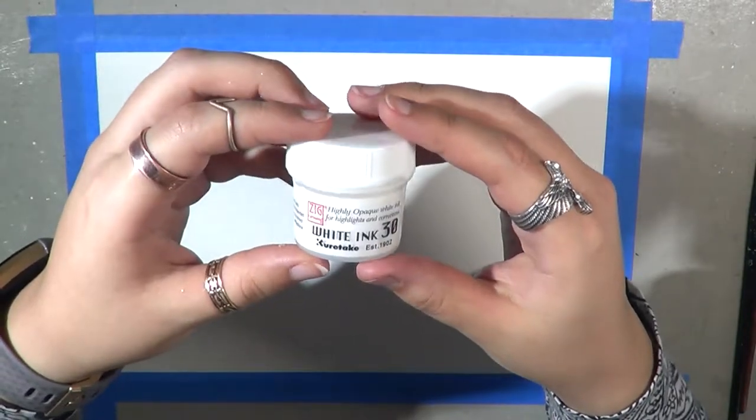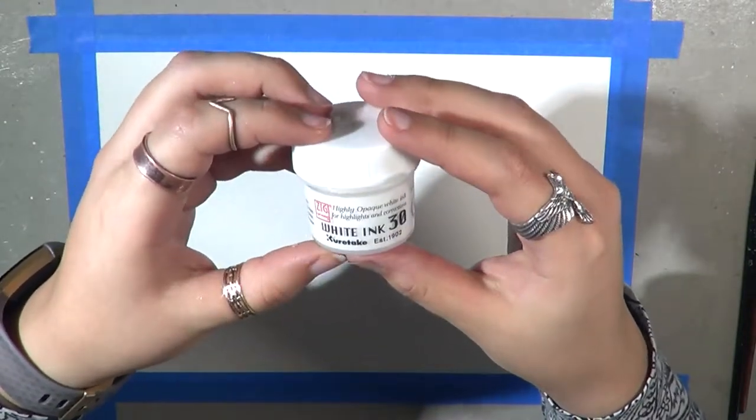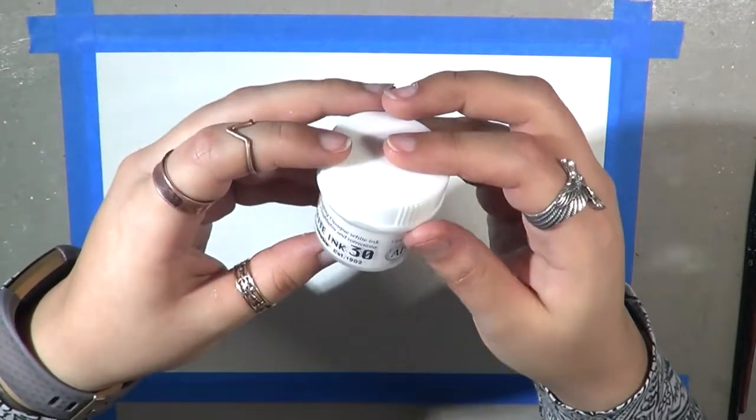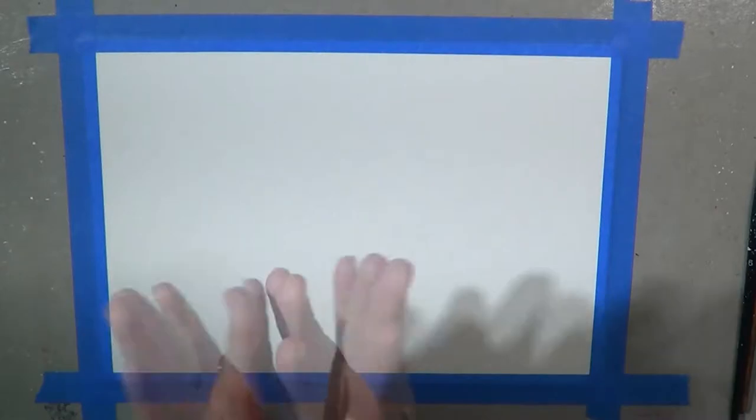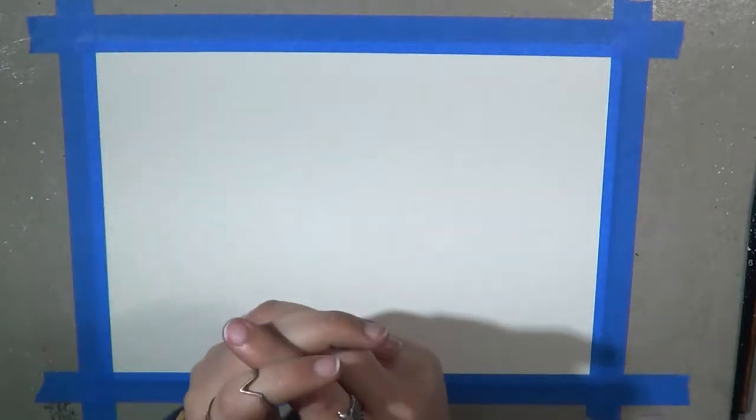I'm mainly using Windsor and Newton ink and this one by Kuretake is a new one that I'm going to try out that I just picked up recently from eBay. We'll return in a moment and we'll start painting.